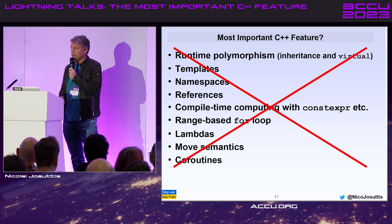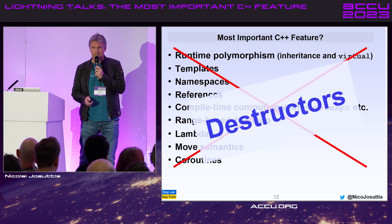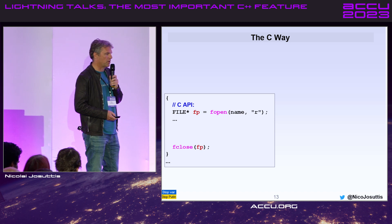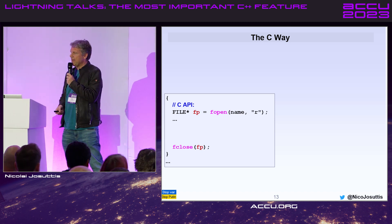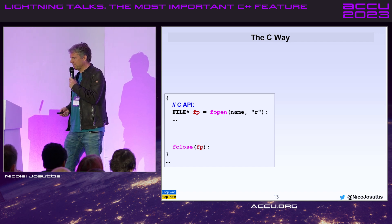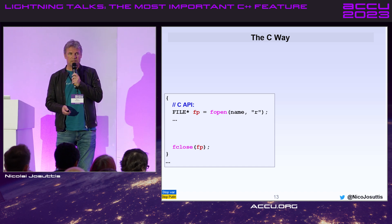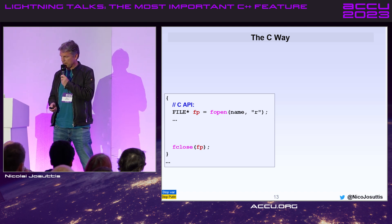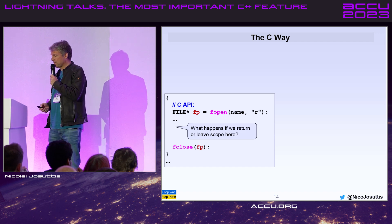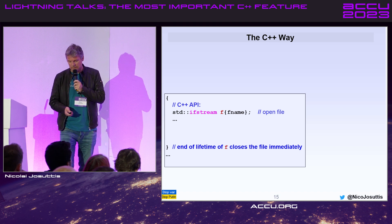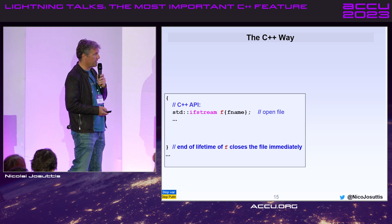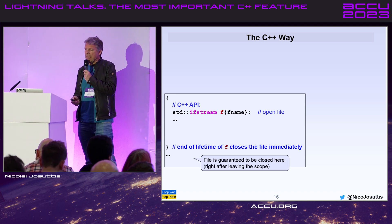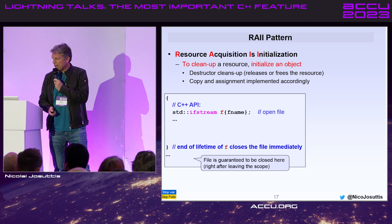The most important C++ feature is destructors. In C-style imperative programming, programs don't have destructors — if you open a file and want to close it later, you have to close it explicitly with a second function, and you can never guarantee cleanup when leaving a scope. With a destructor, you initialize an object at the beginning and close it automatically at the end of its lifetime.